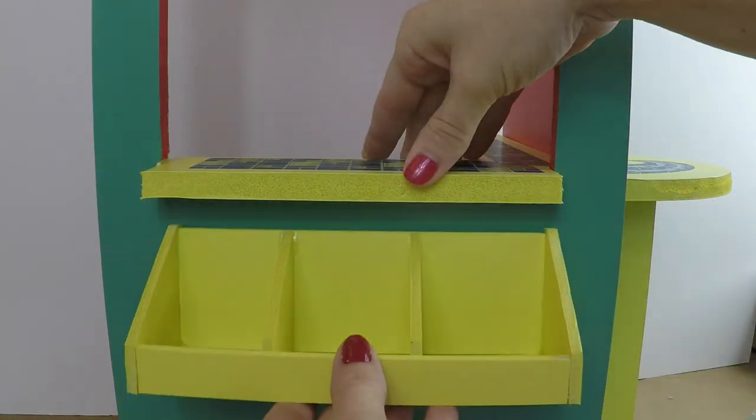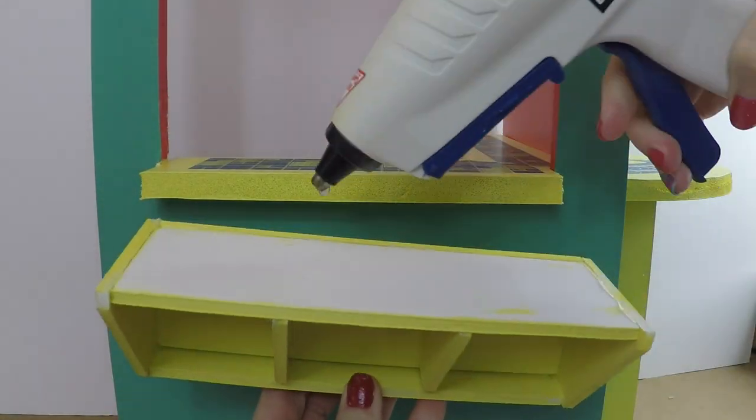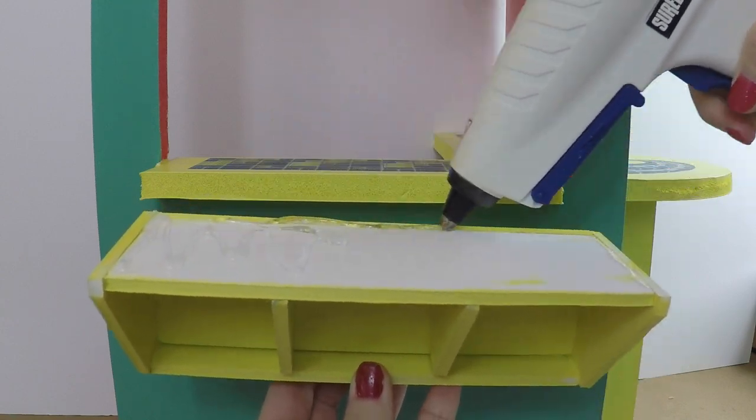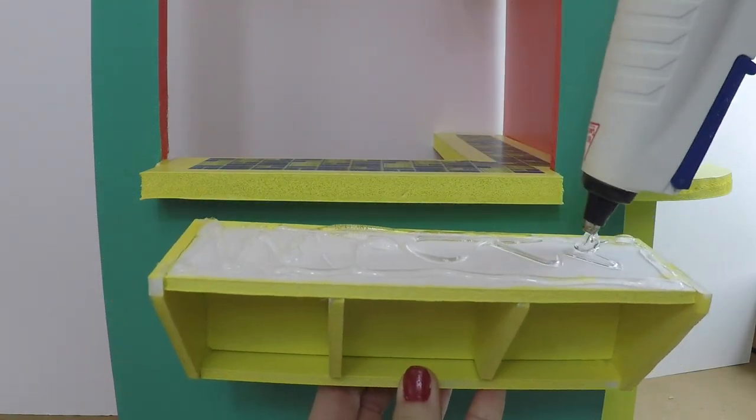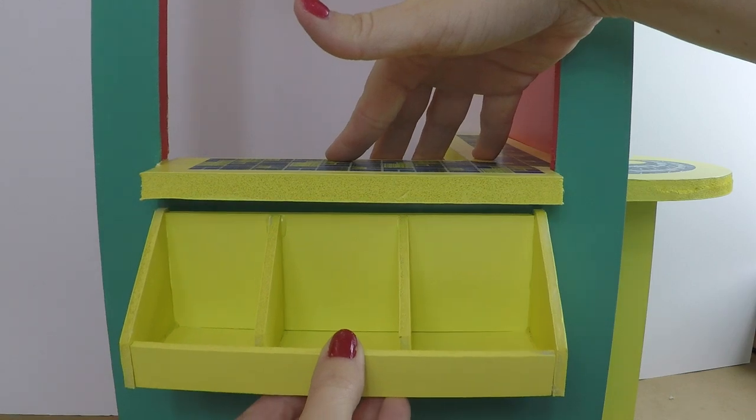Again, the same step for the front fruit shelf. Mark it where you want it, apply the hot glue to the back, and press it into place. Once it's dry, it won't move.